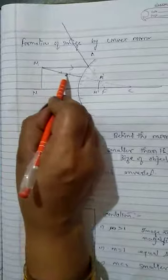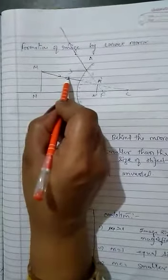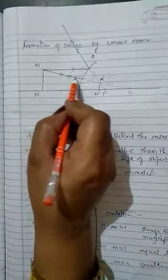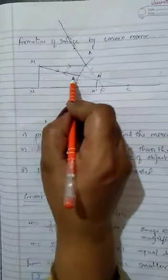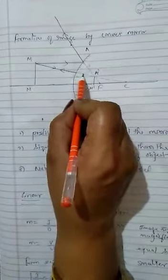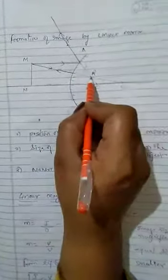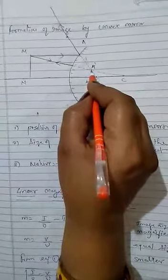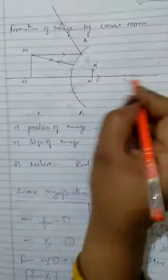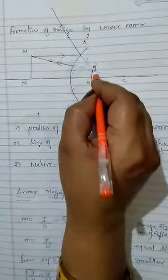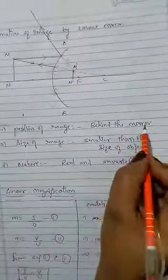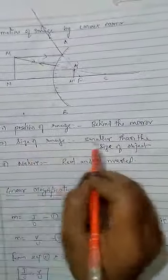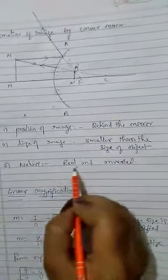For the second ray: if the ray normally strikes the mirror, according to the rule it reflects back along the same path but in the opposite direction, and it appears to come from the center of curvature C. These two reflected rays will intersect each other at point M'. Drawing a perpendicular on the principal axis gives the image M'N'. Three points: Number 1: position of image is behind the mirror. Number 2: size of image is smaller than the size of the object. Number 3: nature is virtual and erect.